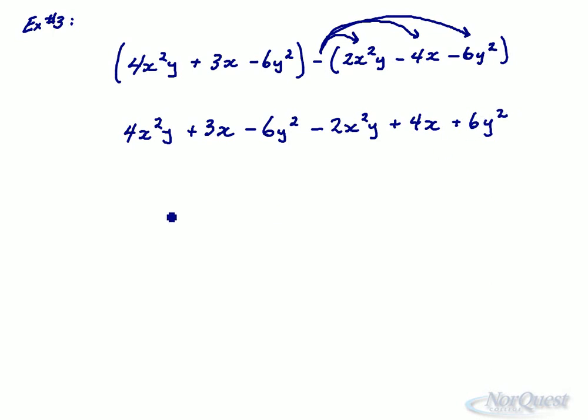Especially if you had 7, 8, 10, 12 terms to collect. It gets a little bit messy. But in this case, I have 4x²y's - 2x²y's to give me 2x²y. 3x and 4x to give me 7x. Negative 6y² + 6y² that adds to 0. So we're done. We simplify to only 2 terms. 2x²y + 7x.